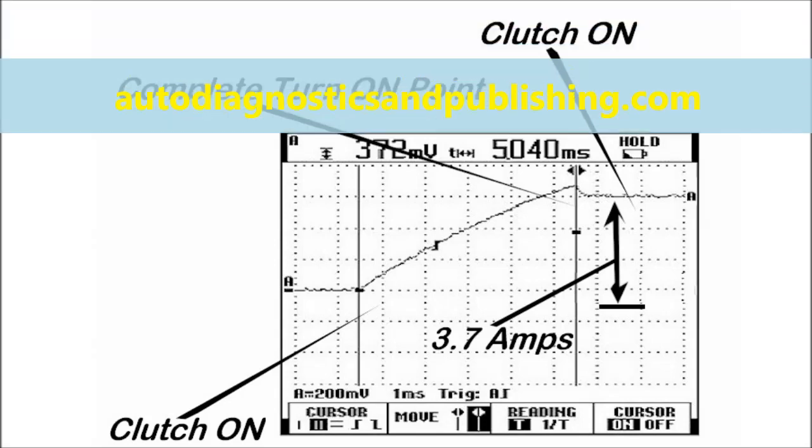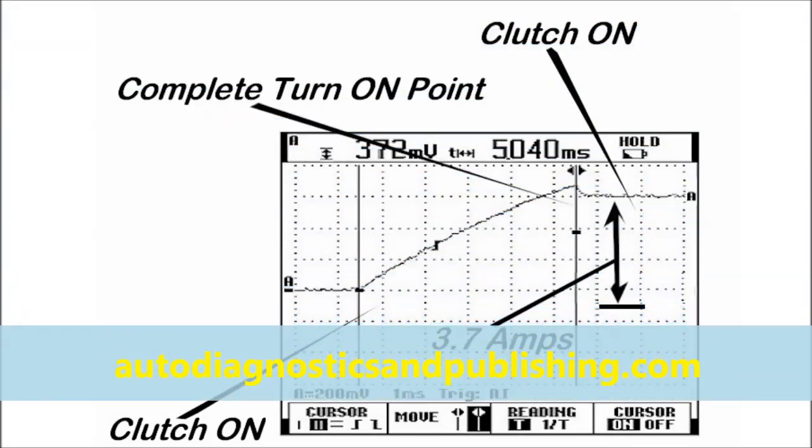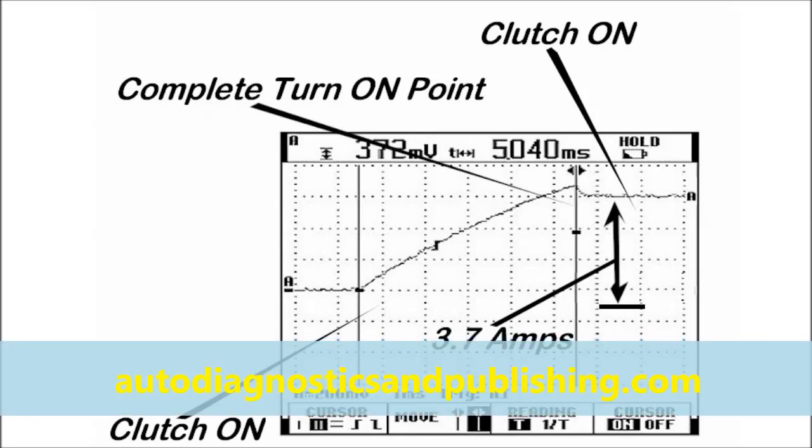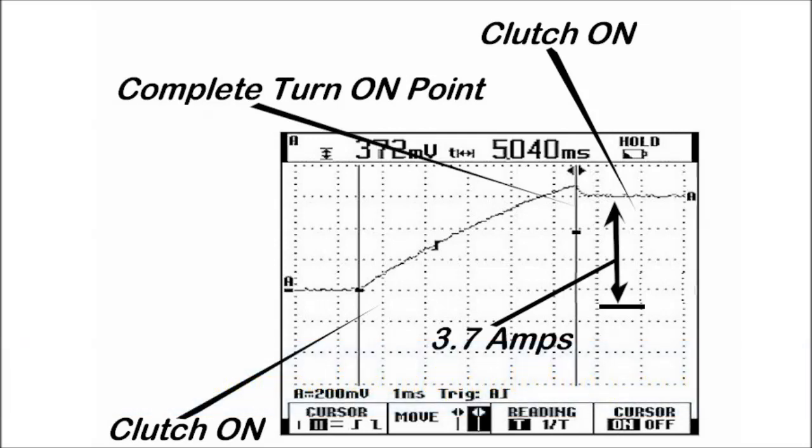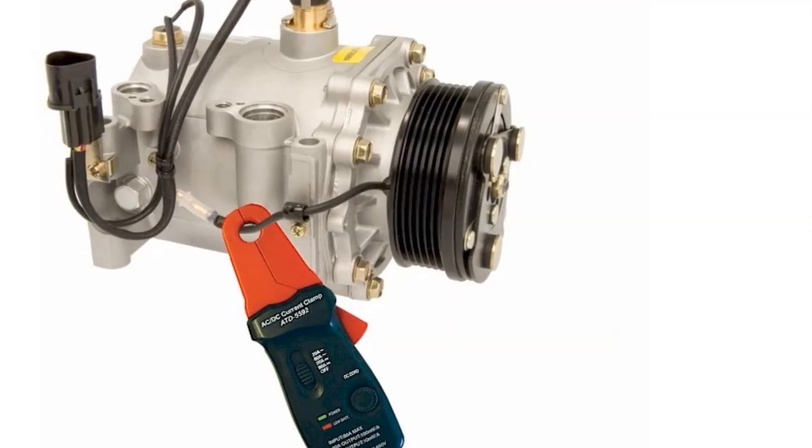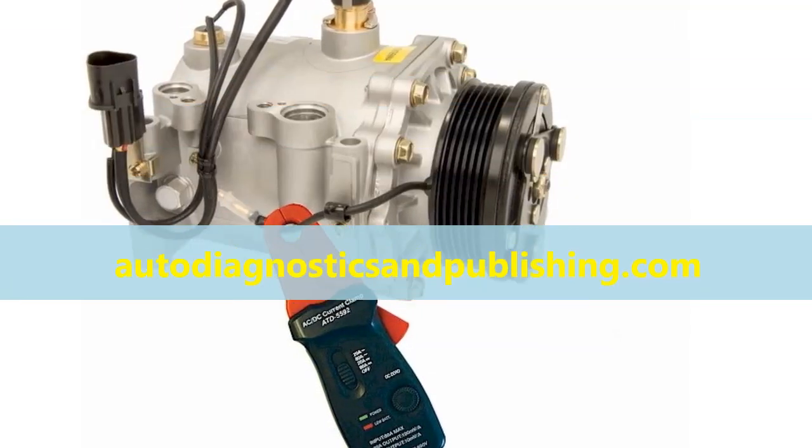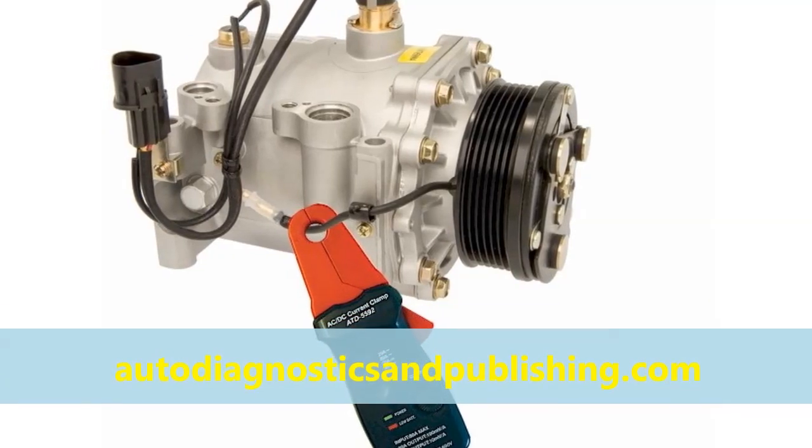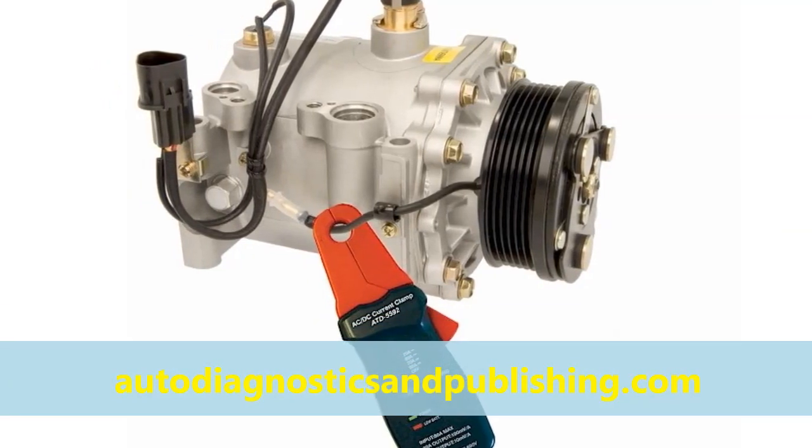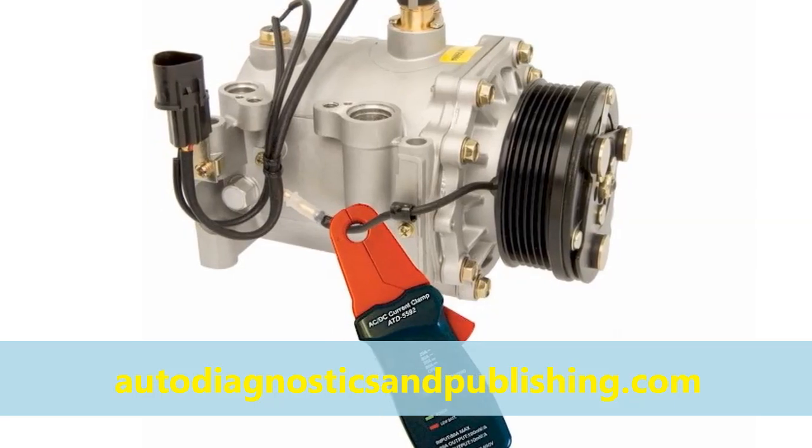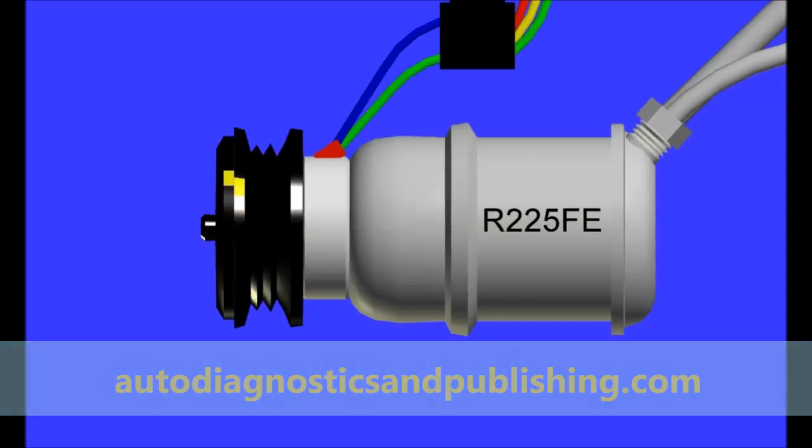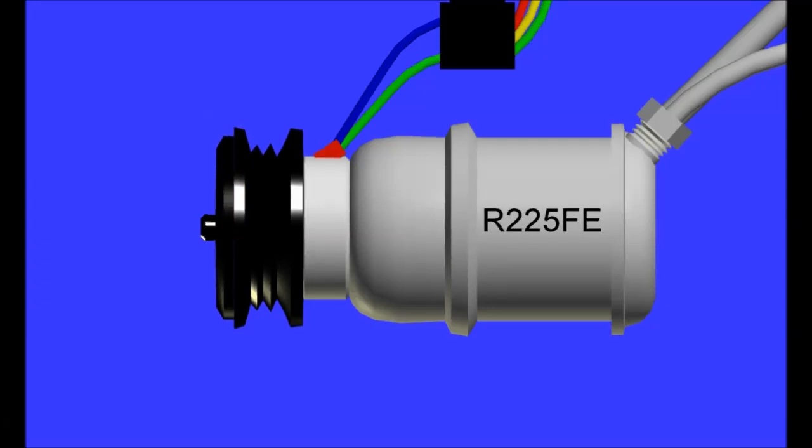You can use any oscilloscope that you want. On our website we sell oscilloscopes. Go to our website autodiagnosticsandpublishing.com and you'll be able to see them. So that's all there is to it as far as compressor clutch adjustment and testing. We'd like to thank you for tuning in to our channel here on YouTube, ADP Training. Visit our website autodiagnosticsandpublishing.com. We're always giving out free stuff, books, free software, you name it. And it's free, so what do you care?